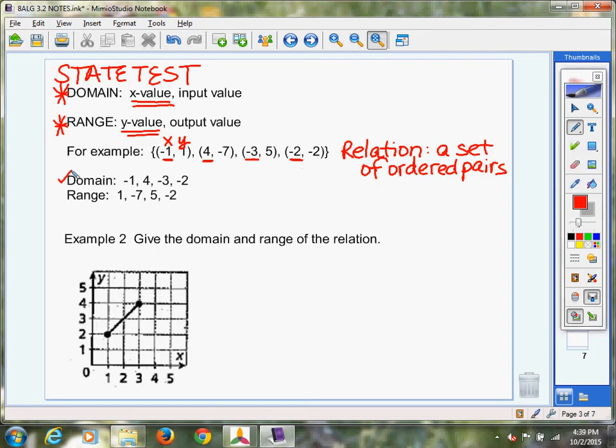The range would be your second number in each of your ordered pairs. And I'll do two lines under each one just to distinguish it. So you can see it's 1, negative 7, positive 5, and negative 2, and that's your range.